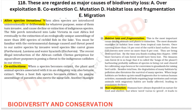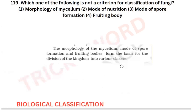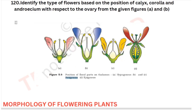The major causes of biodiversity loss — four points are given in your NCERT. Apart from mutation and migration, all are correct. This is from your biodiversity and conservation chapter. Which of the following is not a criterion for classification of fungi? From your biological classification, before dealing with the classification of fungi, the criteria given are: morphology of the mycelium, mode of spore formation, and fruiting bodies. Apart from mode of nutrition, all are the right answers.